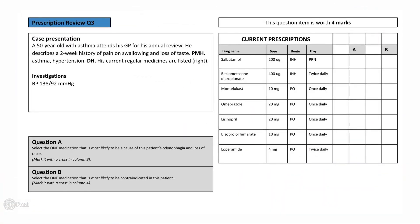Here we have a 50-year-old asthmatic man who attends his GP for an annual review. He has had a two-week history of odynophagia and loss of taste. His past medical history includes asthma and hypertension. During this appointment his blood pressure was measured at 138/92. His current prescriptions are listed in the table. Question A asks you to identify one medication most likely to be causing the patient's odynophagia and loss of taste. Question B asks which one medication is most likely to be contraindicated in this patient.